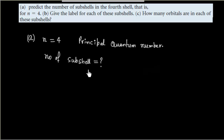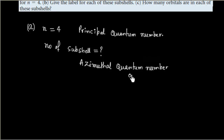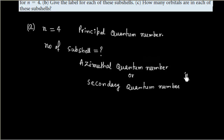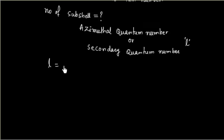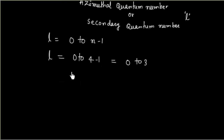The number of subcells is given by the secondary quantum number, also called the azimuthal quantum number, denoted by a small l. The value of l ranges from 0 to n-1. So if n is equal to 4, the value of l will be 0 to 3. The possible values of l are 0, 1, 2, and 3 — so there are 4 subcells.